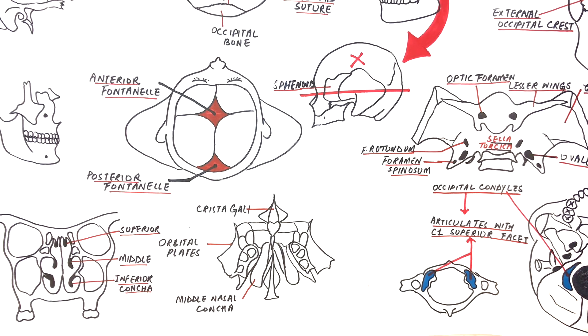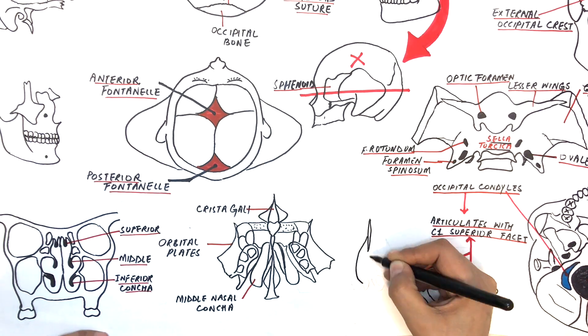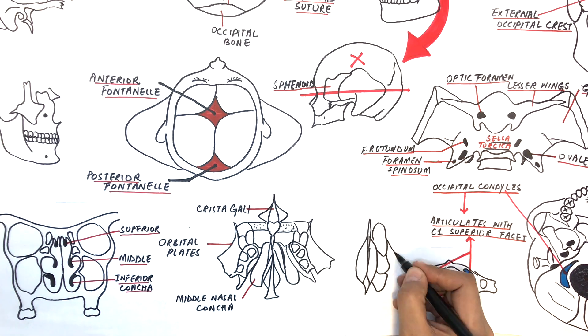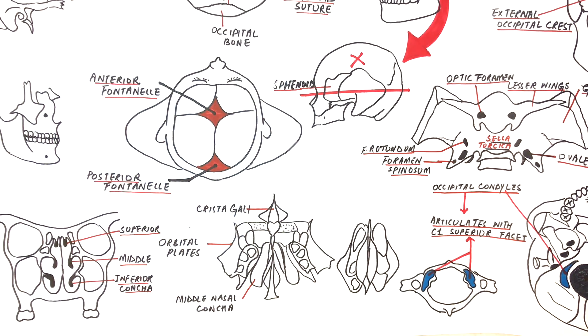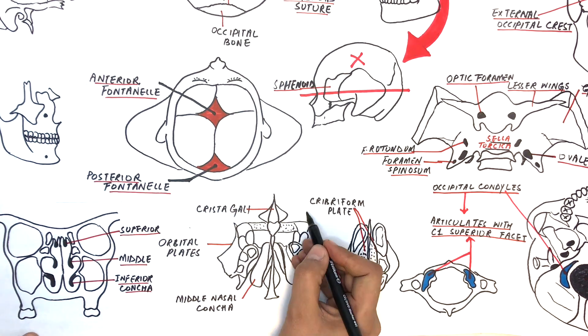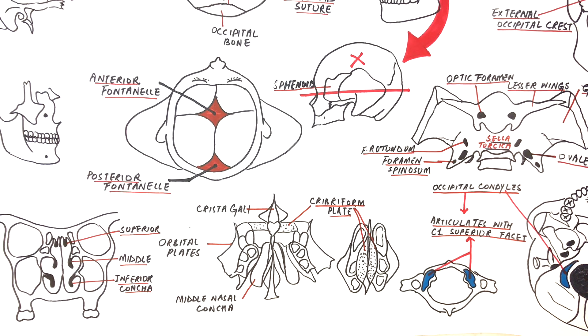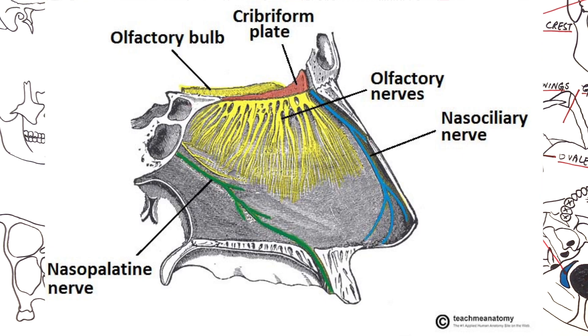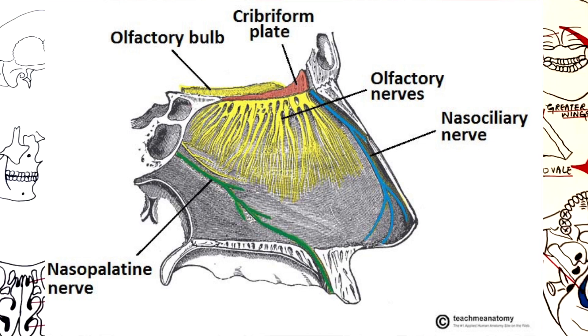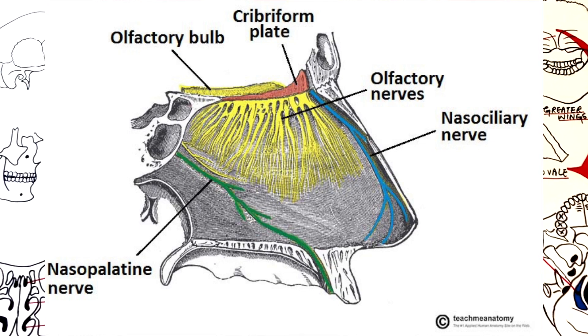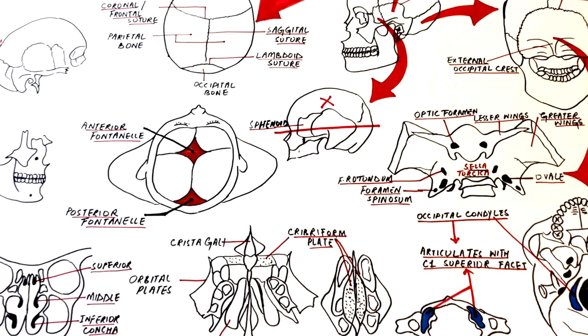From the superior view, on the lateral sides of the crista galli is the cribriform plate. In Latin, cribriform means something having plenty of small holes. These holes in the cribriform plate of the ethmoid bone are the passageway for the small sensory fibers of the nasal mucosa, which after passing from these holes turn into olfactory bulb and then the olfactory nerve, which is the cranial nerve number one responsible for olfaction or the sense of smell.